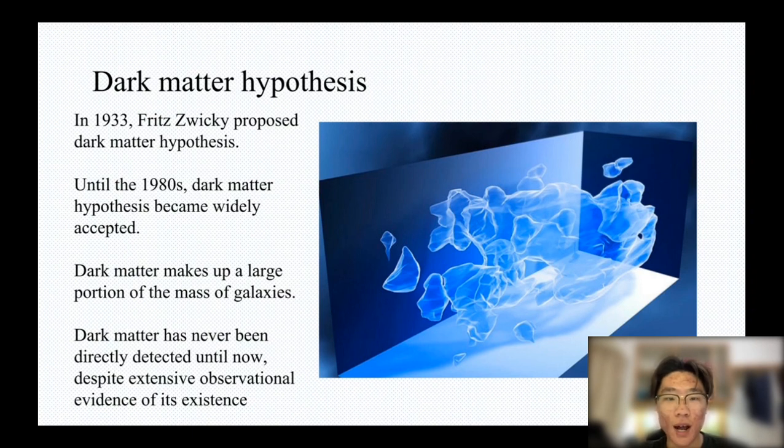Dark matter makes up a large portion of the mass of galaxies. The gravitational pull caused by dark matter keeps the massive galaxies spinning at high speeds stable.